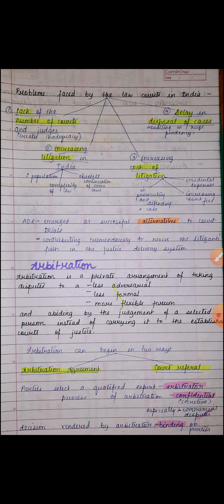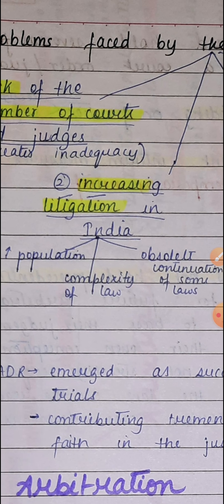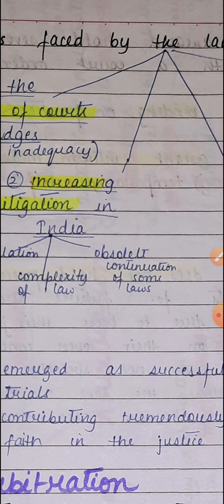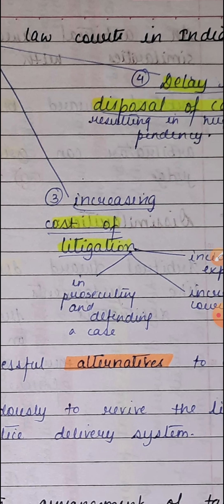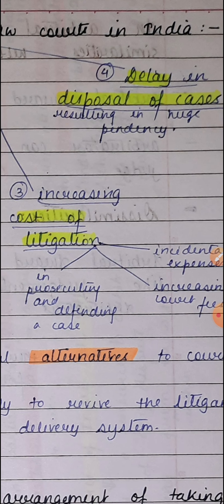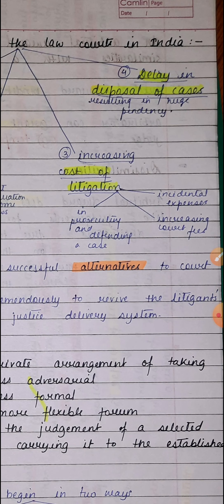Problems faced by traditional law courts in India: first, the lack of number of courts and judges creates inadequacy. Second, increasing litigation — formally settling cases in court — is growing due to high population and complexity of law. Third, increasing cost of litigation — lawyers' fees, court registration fees, and incidental expenses are high. Fourth, delay in disposal of cases resulting in huge pendency: cases can last several years.